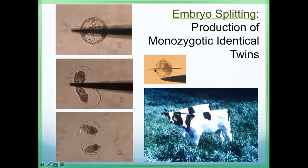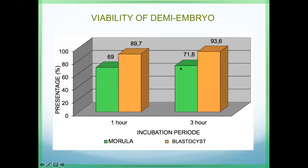In the lab, after culture to one hour, the development rate of demi-embryos was 69 to 89%. After three hours they develop further. It's better to use the blastocyst stage embryo for other technologies of assisted reproduction.